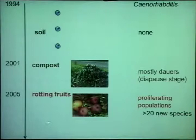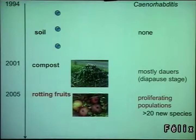It took a few more years before we found out that rotting fruits were a very rich source. The reason is that you have to look at many fruits before you find it, so probably the first attempts were not successful. But in rotting fruits, we definitely find proliferating populations. And as you know, we found many new species of Caenorhabditis that way around the world.